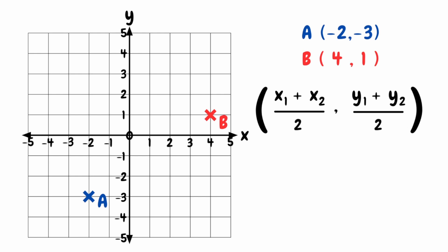When we see x1, that just means the x-coordinate from our first point A, and x2 would be our x-coordinate from our second point B. And then the same for the y-coordinates. Our y1 would be our y-coordinate from point A, and our y2 would be our y-coordinate from point B.